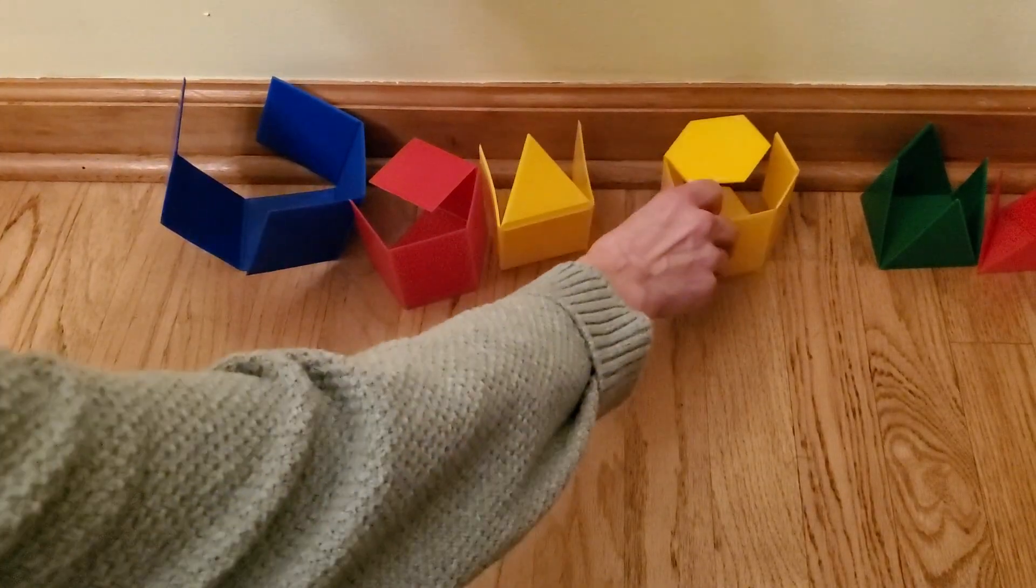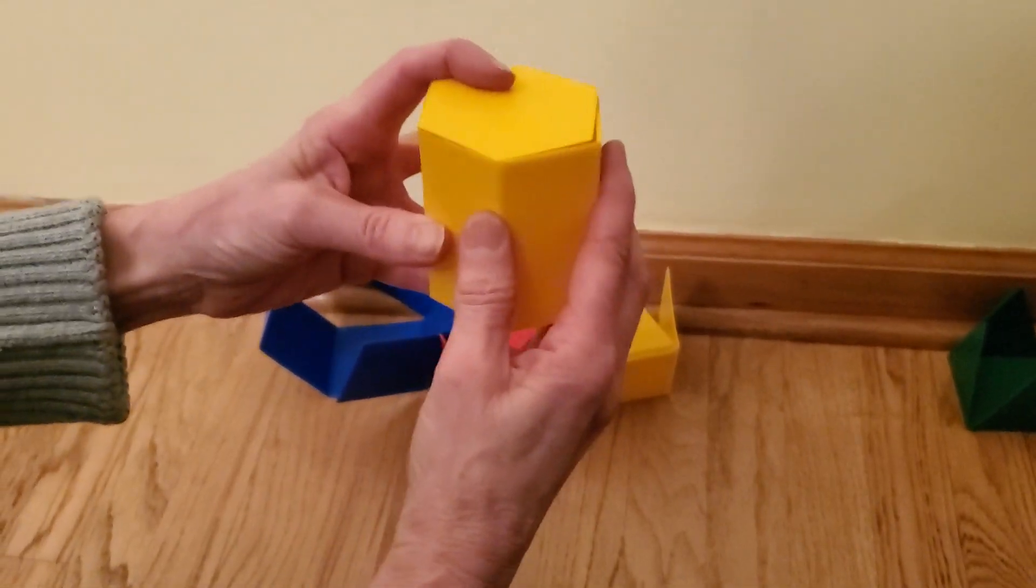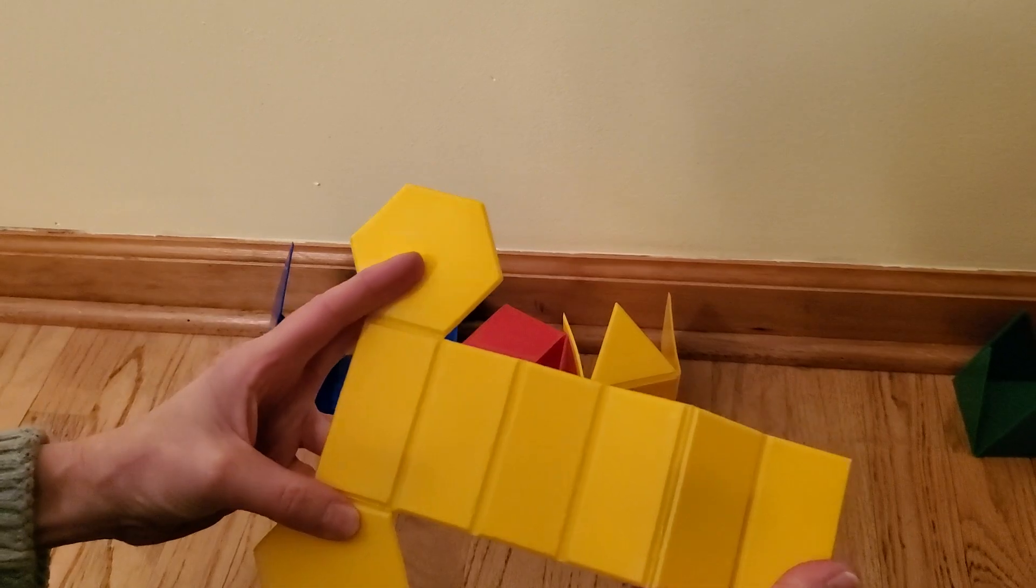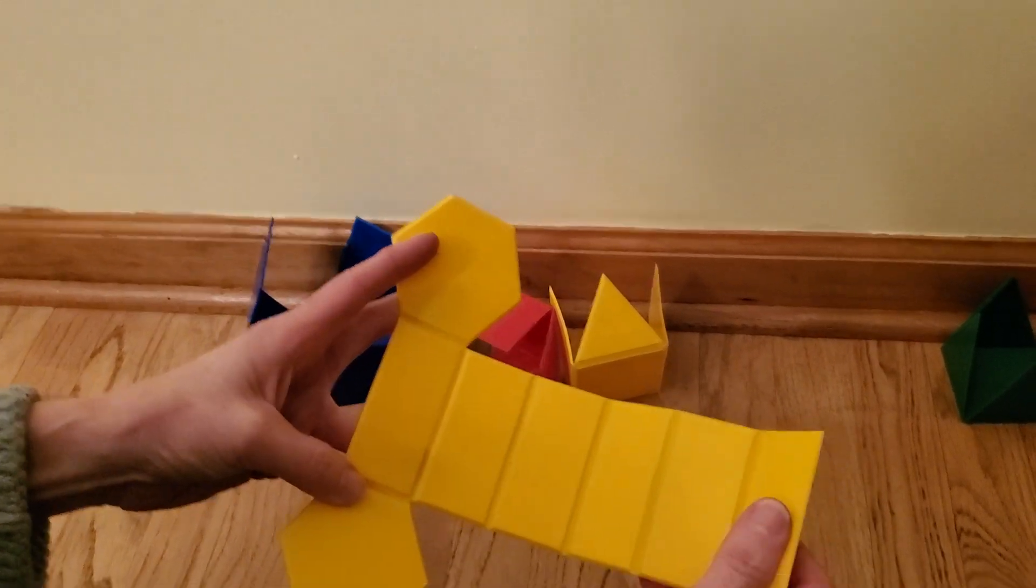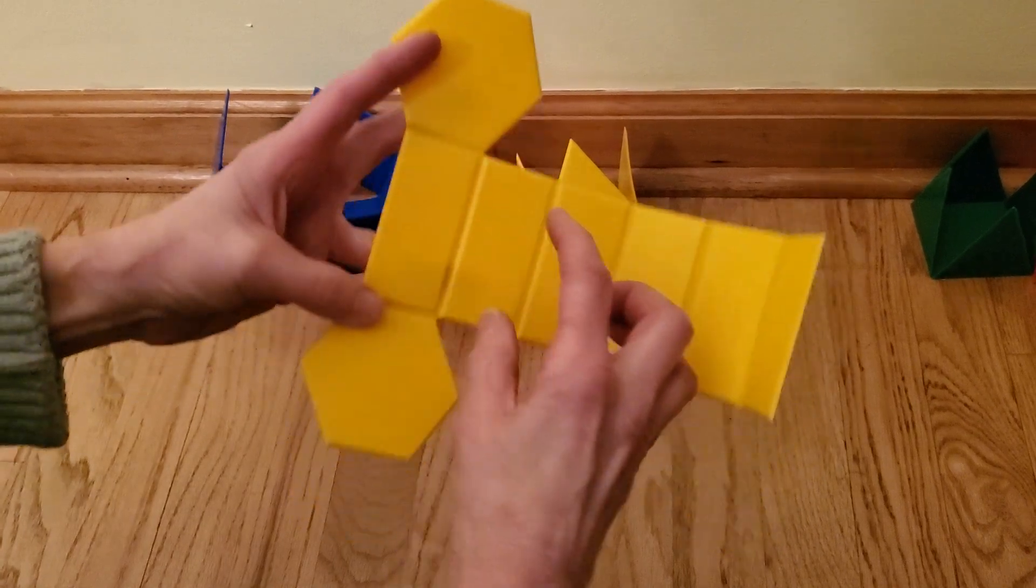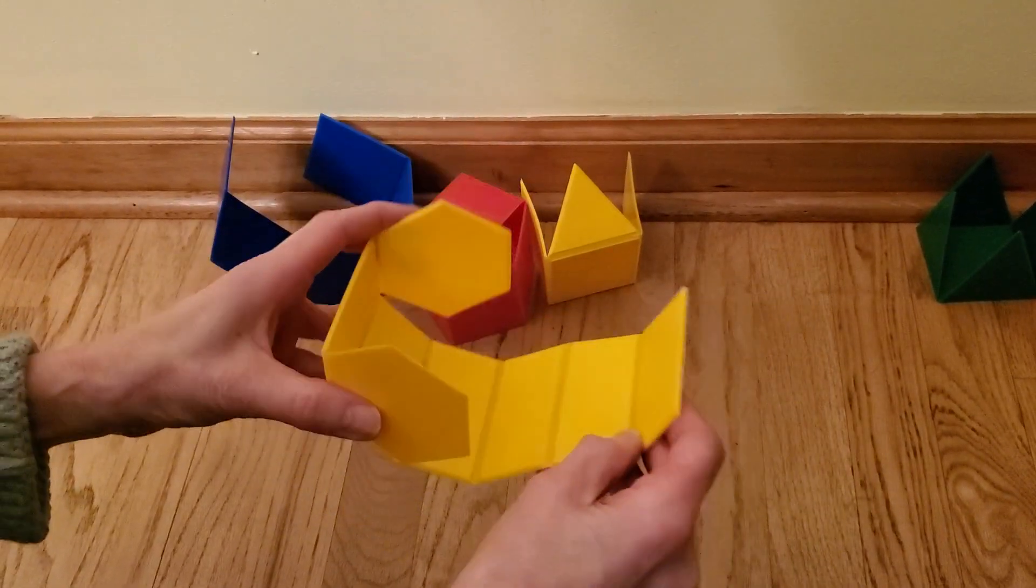And the last prism is a hexagonal prism. Again, this is the solid shape of my prism. When I open up the net, it is mostly made up of rectangles. There are one, two, three, four, five, six rectangles and two hexagons. That gives me eight faces for this particular shape.